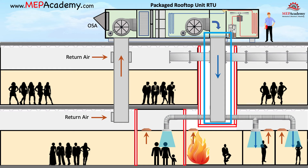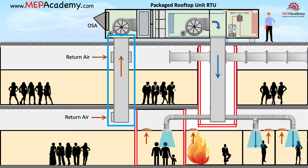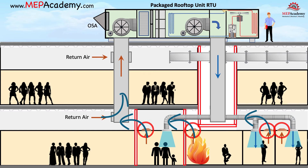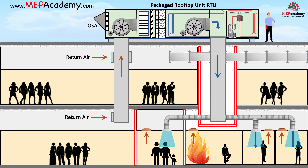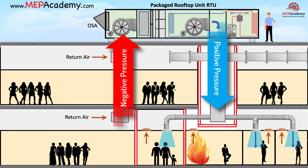A main supply air duct feeds all of the first floor spaces and is returned using an attic return from the spaces into the main return air riser. Each of the spaces will receive a connecting supply air duct and a return air grill that lets the air find its way back to the air conditioner through the return main. The fan in the air conditioner creates a positive pressure on the supply side pushing the air through the duct, while the return side creates a negative pressure and pulls the air back to the AC unit.